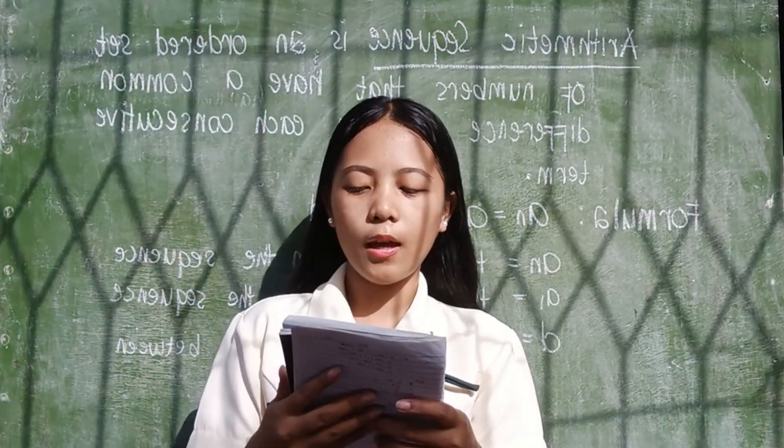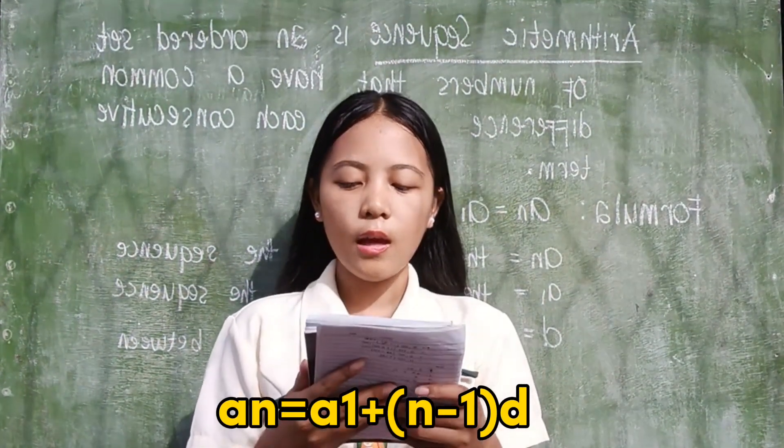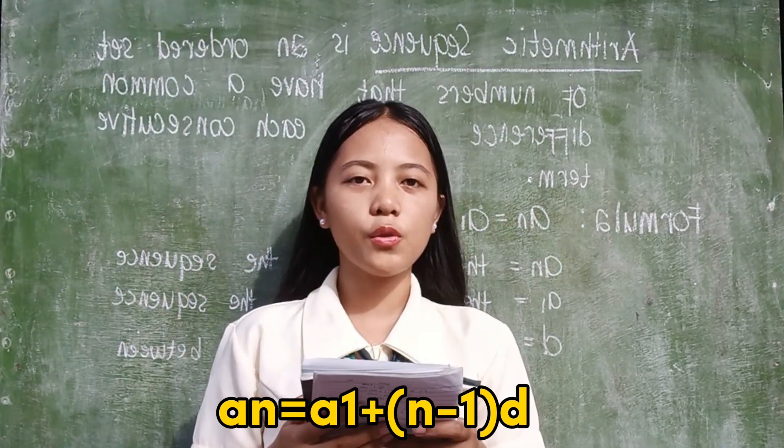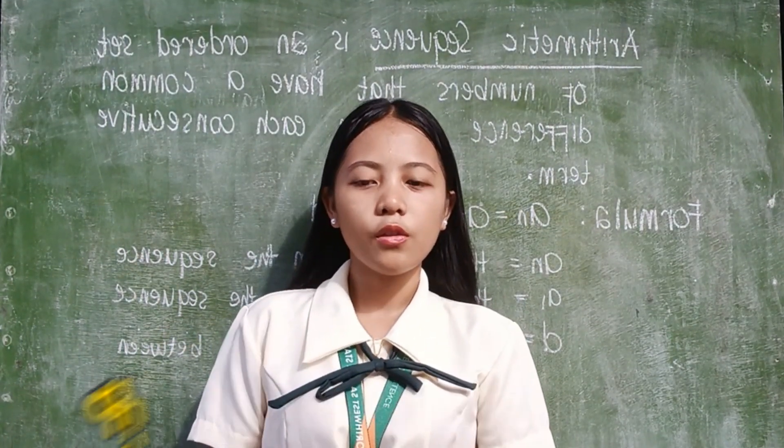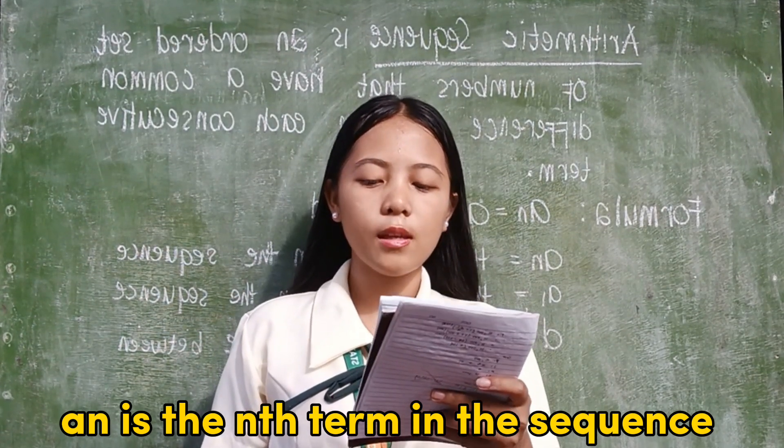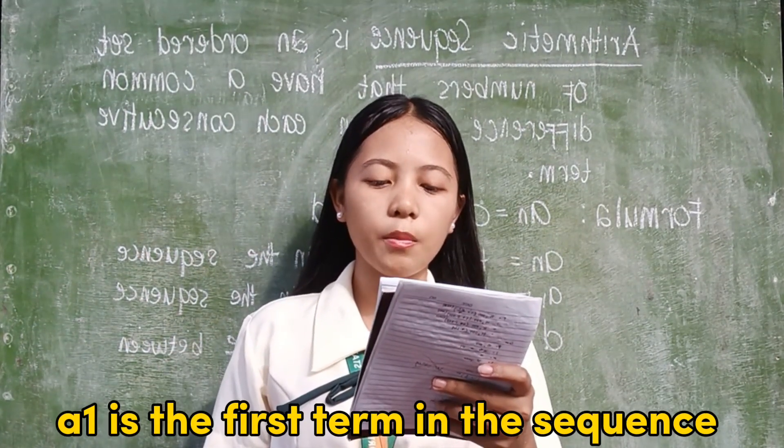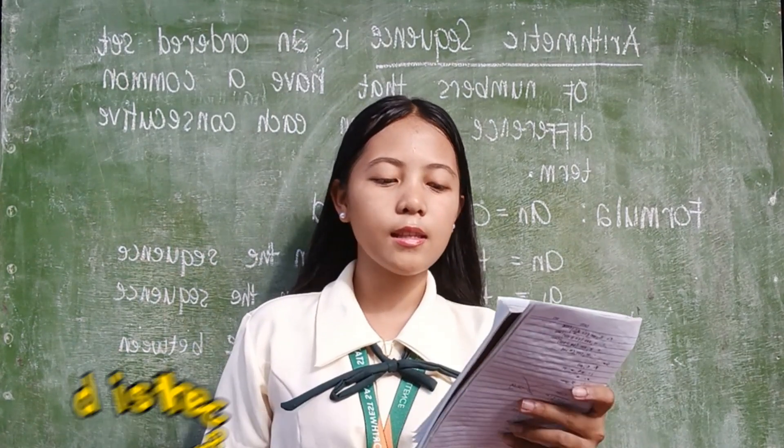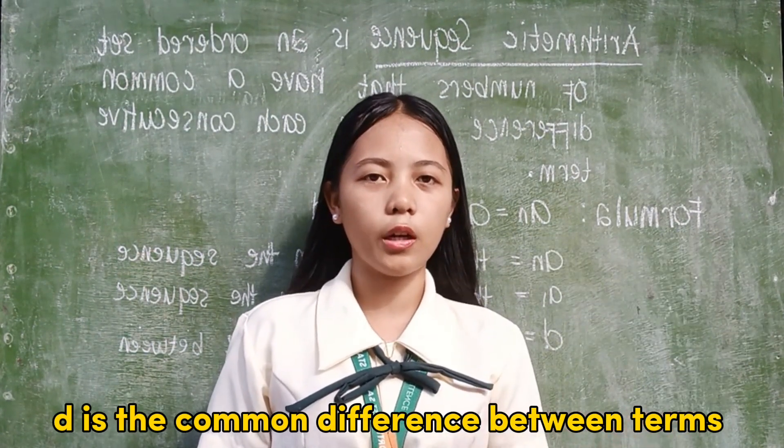The formula of arithmetic sequence is an equals a1 plus n minus 1 times d. The an is the nth term in the sequence, the a1 is the first term in the sequence, and the d is the common difference between terms.